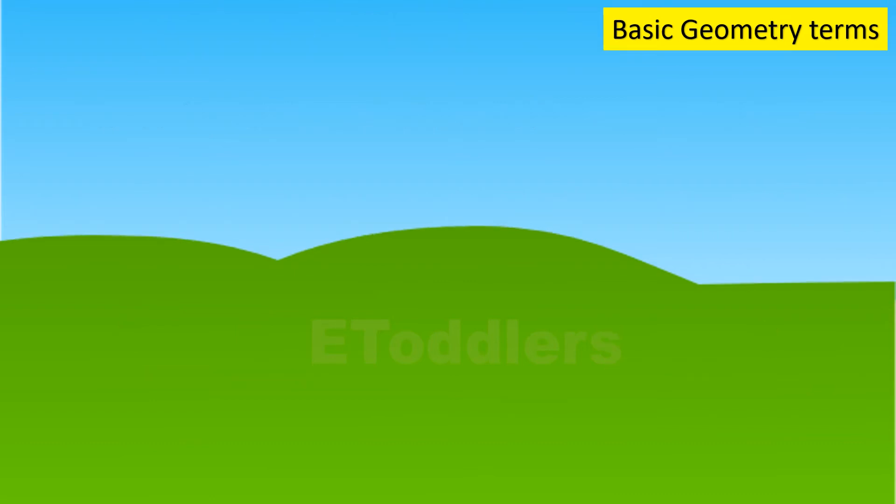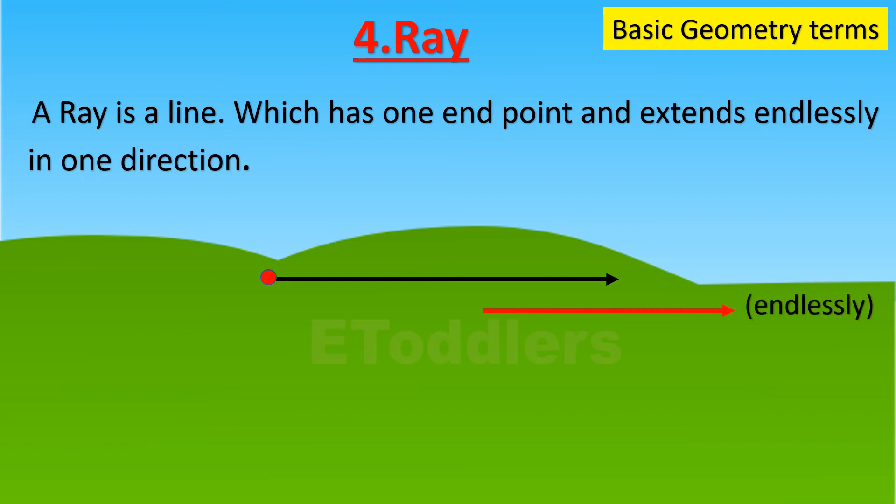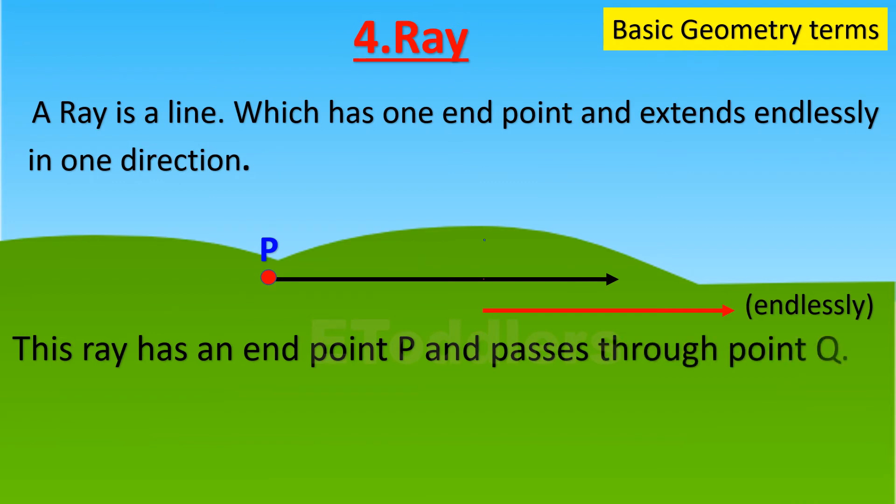The fourth term is ray. A ray is a line which has one endpoint and extends endlessly in one direction. This ray has an endpoint P and passes through point Q. We name it ray PQ.